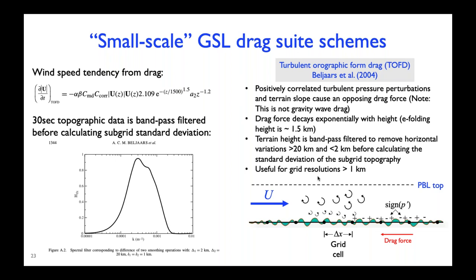Returning to the turbulent orographic form drag scheme: the drag force is proportional to the square of the wind speed and decays exponentially with height. Like the gravity wave drag schemes, it uses the standard deviation of subgrid-scale topography, but before it's calculated, the global topography is bandpass-filtered. Horizontal topographic variations larger than 20 kilometers are filtered out, as well as variations smaller than about 2 kilometers. The topographic variations smaller than 2 kilometers are extrapolated based on empirical studies of very high-resolution topography on the order of tens of meters. This drag scheme is useful for grid spacings down to about one kilometer.